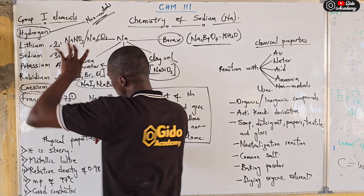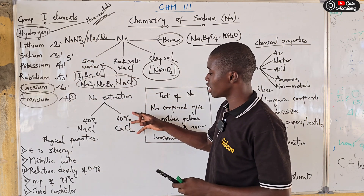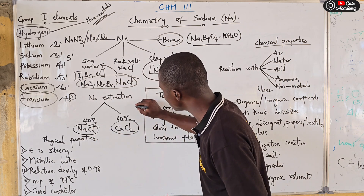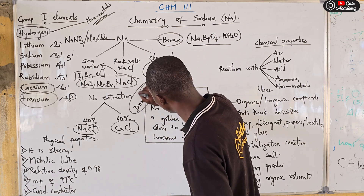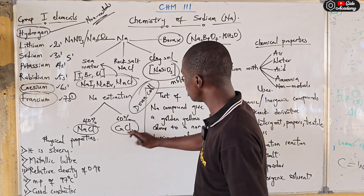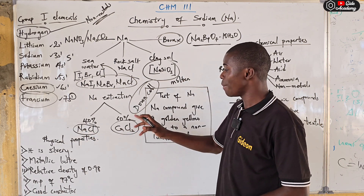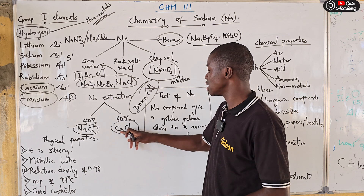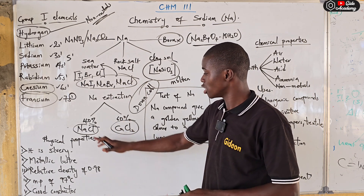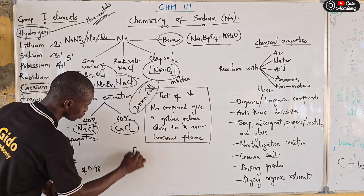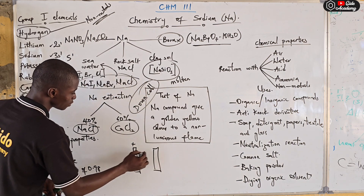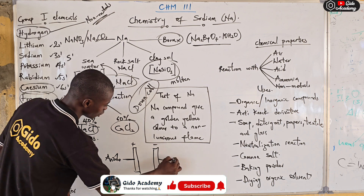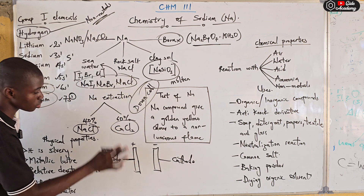Sodium is extracted by electrolysis of a molten mixture of sodium chloride and calcium chloride using a Down cell. The mixture contains 40% sodium chloride and 60% calcium chloride. In electrolysis there are two electrodes: the positively charged anode and the negatively charged cathode.